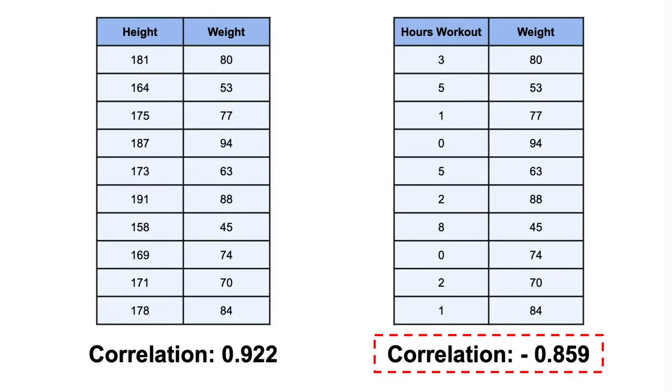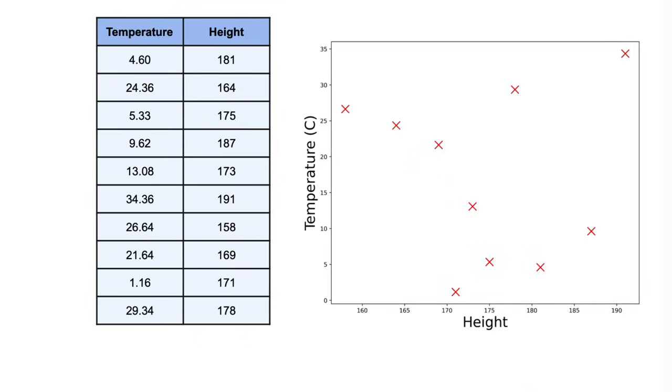Finally, let's measure the covariance and the correlation between two random variables that have mostly nothing in common. Let's say the temperature outside and the height of a person. If we do that, we would get a covariance of minus 5.5, which would tell us that we have a negative relationship between those two random variables. But again, it tells us nothing about the magnitude of that relationship.